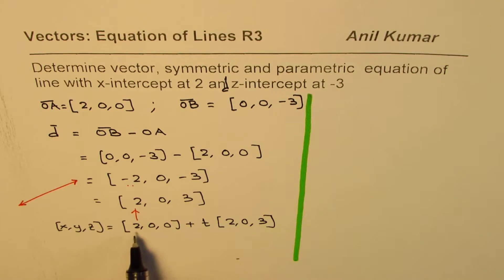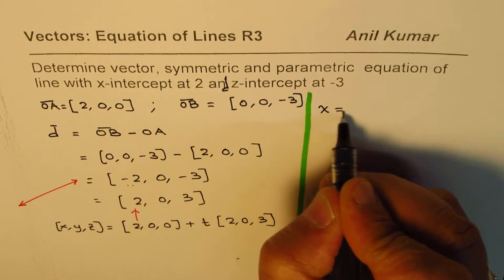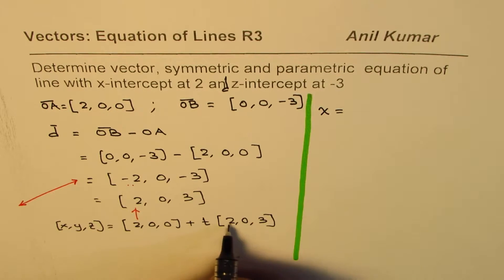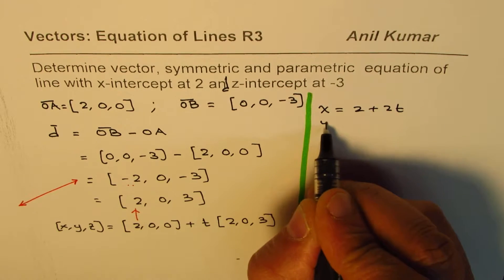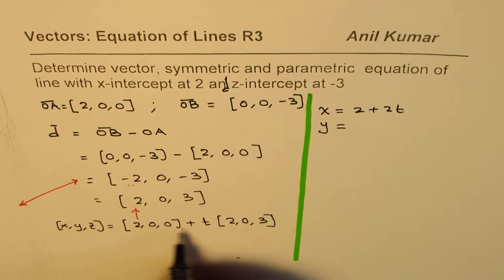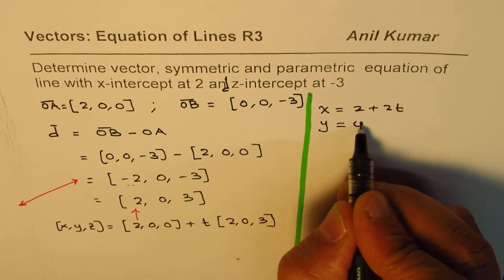So, let's write down the parametric form first, where x, y, and z are written as x equals to 2 plus 2t, right? 2 plus 2t. As far as y is concerned, it is 0 plus 0, that means the y value is 0,